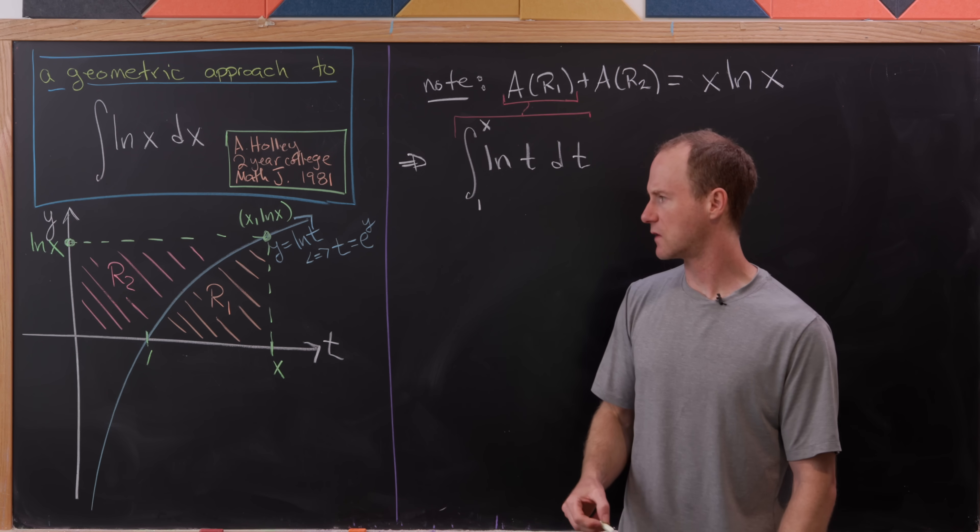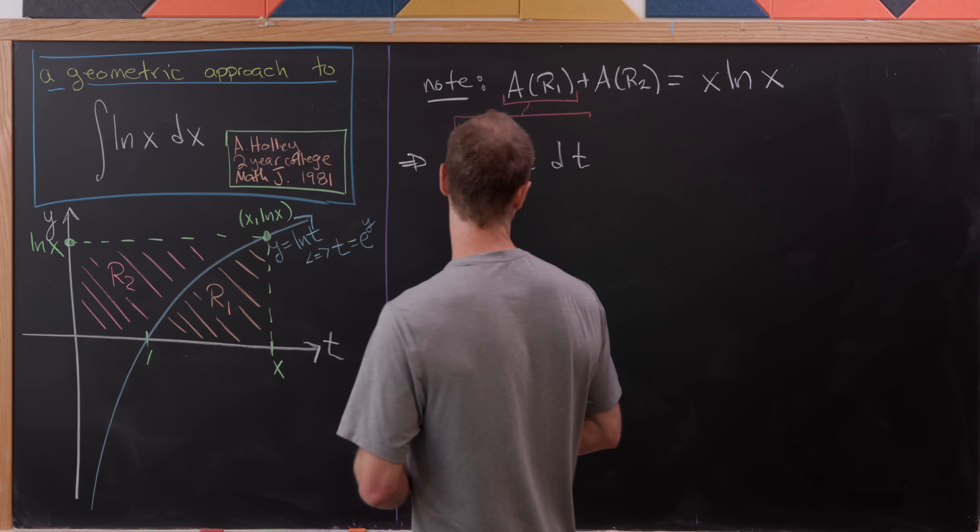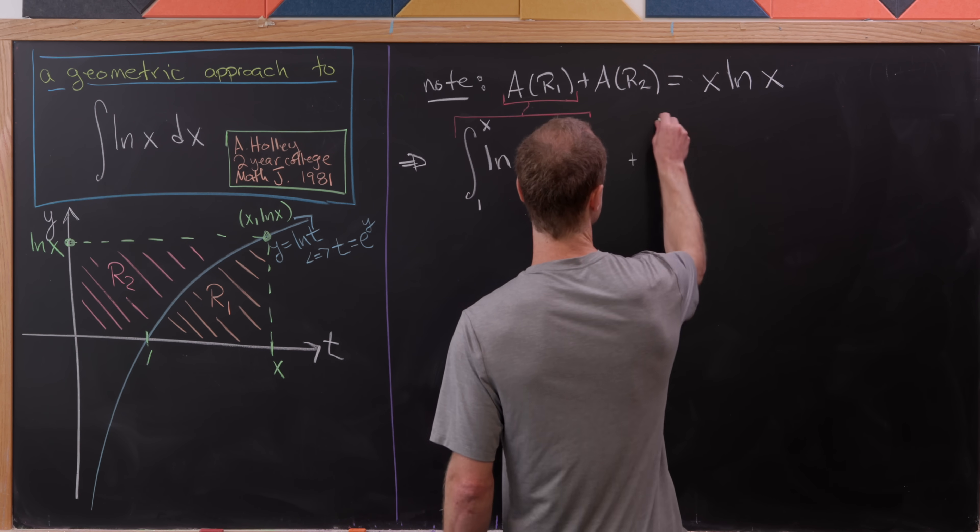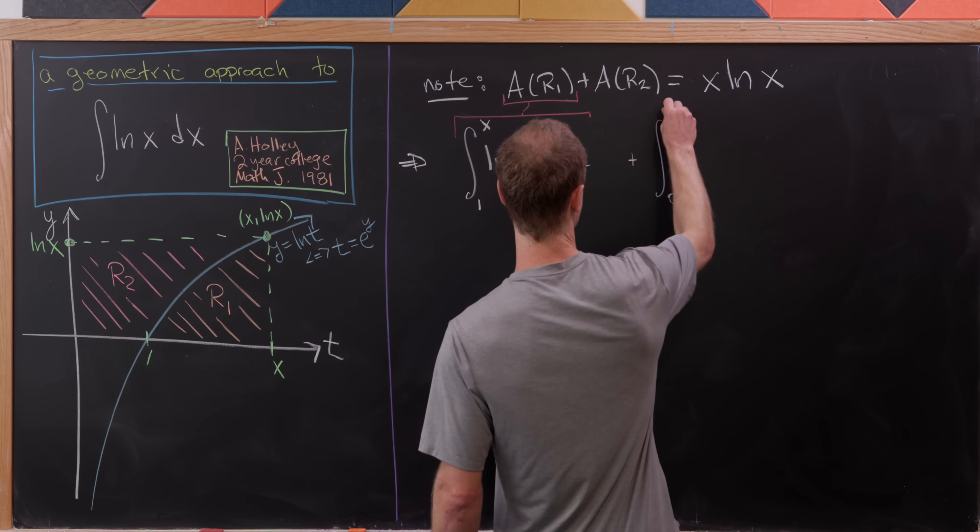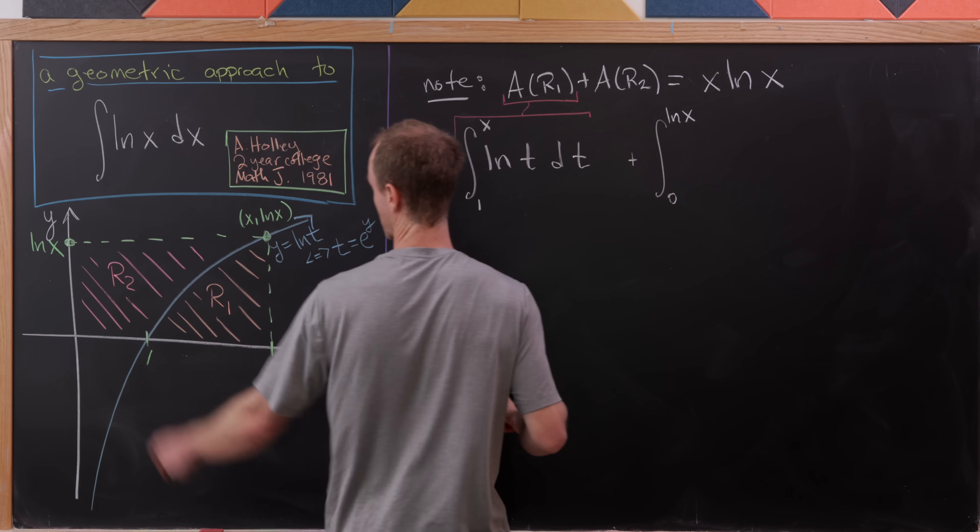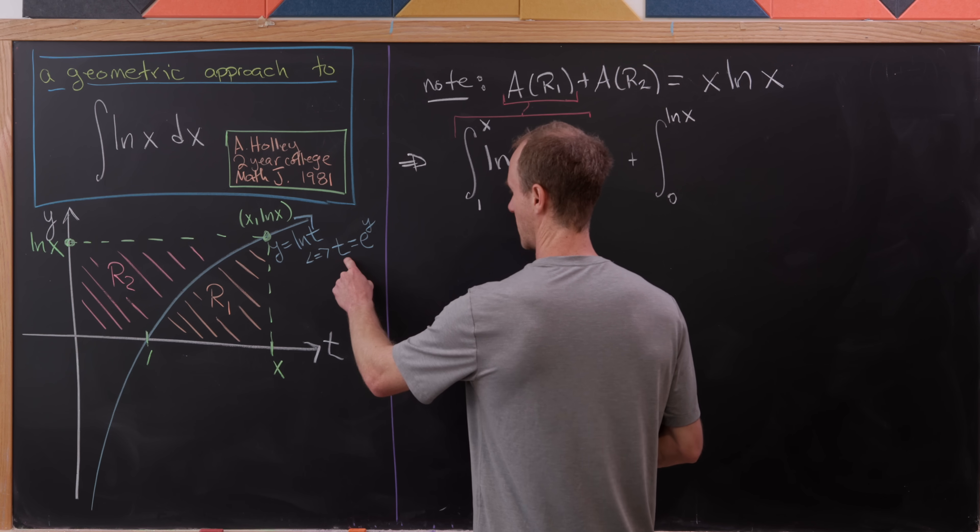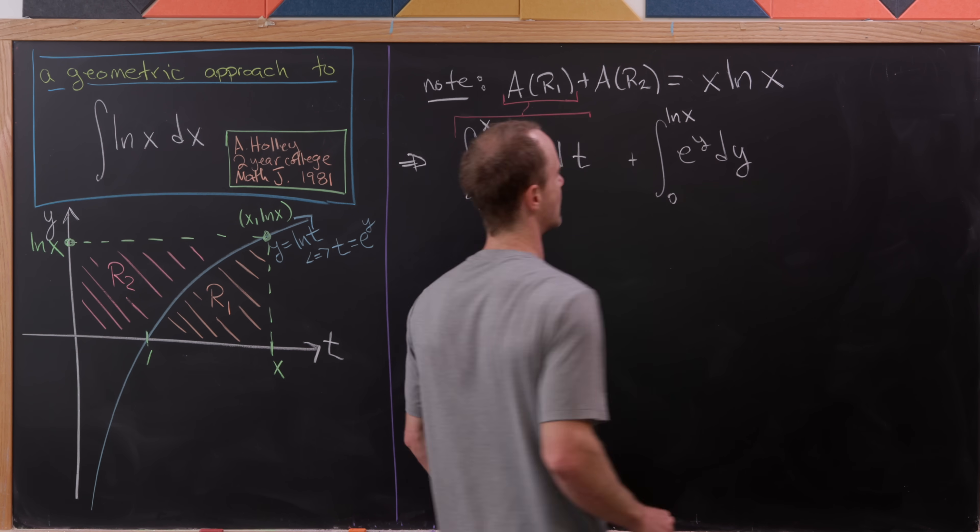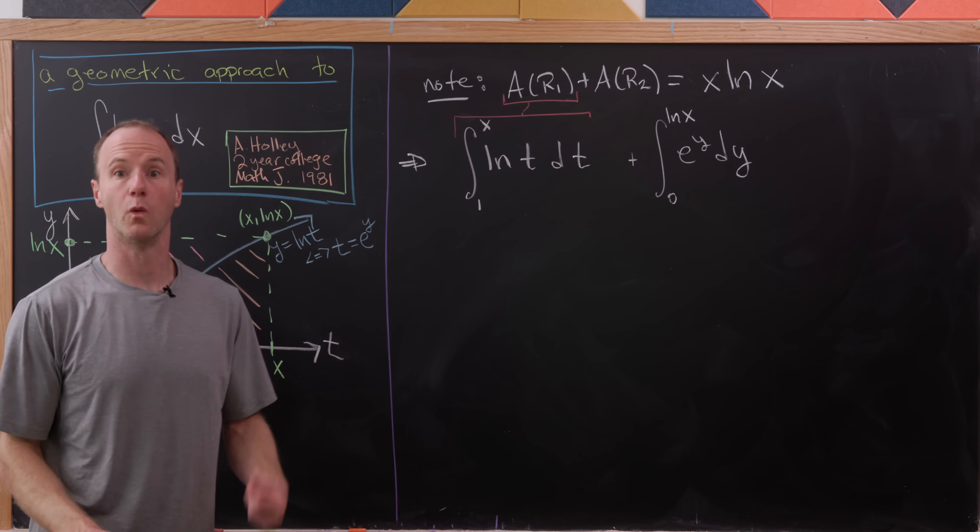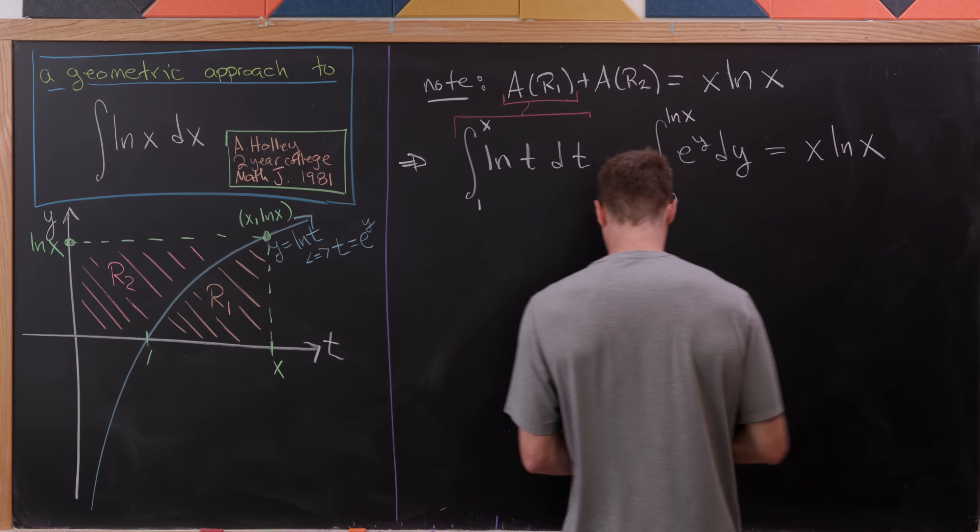Now let's do the same thing for the area of region 2. But let's observe that region 2 can easily be written as an integral over the y-axis. So that's going to be the integral from 0 up to the natural log of x, that's the highest y point, of e to the y dy, just because we're integrating with respect to y in that case. So all of this is going to be equal to x natural log of x.